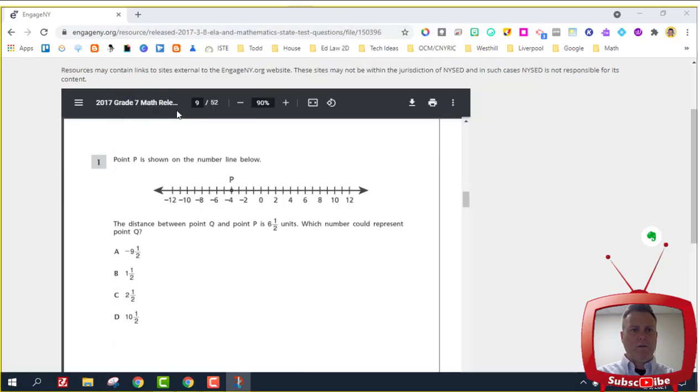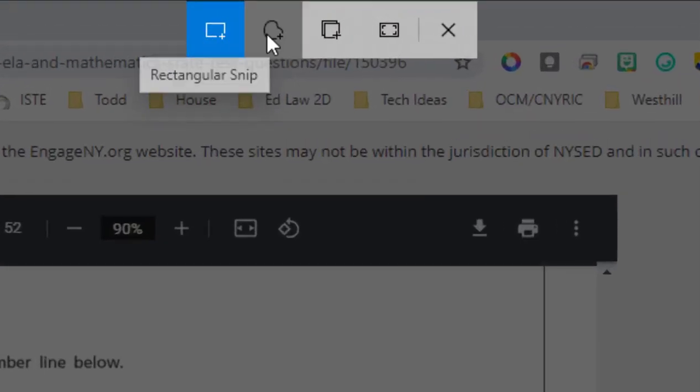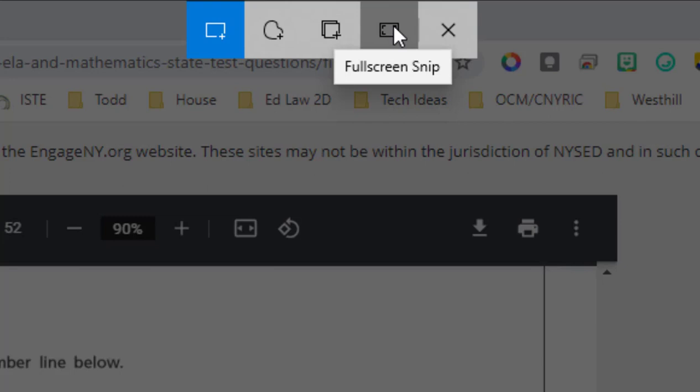I'm going to click new and I can draw my shapes. I have a new toolbar up top and this one is rectangular. Freeform is to the right of it. The window snip is still there so we can take a screenshot of the entire window, and this is a full screen snip. The window snip is just the window you're working with, and the full screen gets everything on your computer screen.